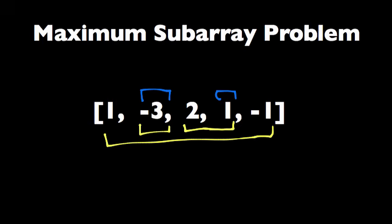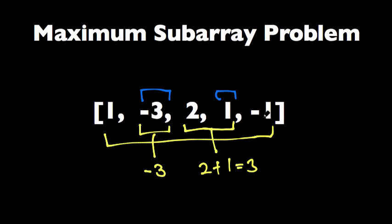The problem here is finding the subarray with a maximum sum. If we look at this subarray, 2, 1, the sum is 2 plus 1 equals 3. And if we look at this subarray with negative 3, the sum is obviously just negative 3. And we are trying to find the one with the maximum sum. In this example, it's actually 2, 1 with the sum 3.